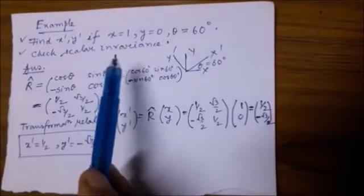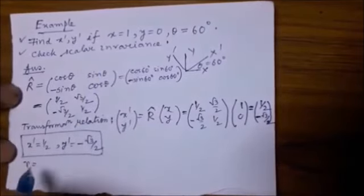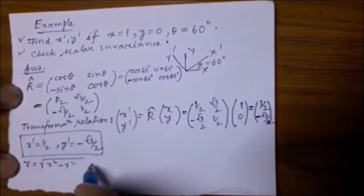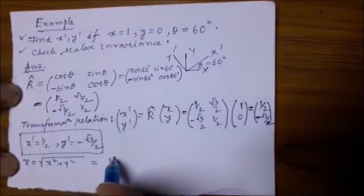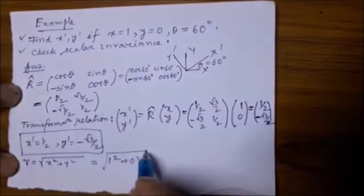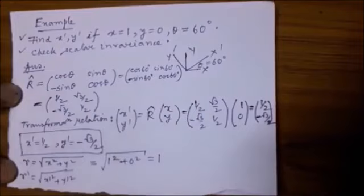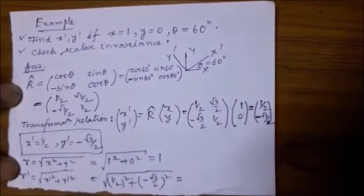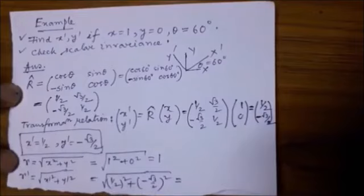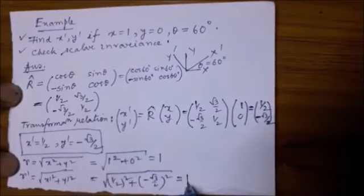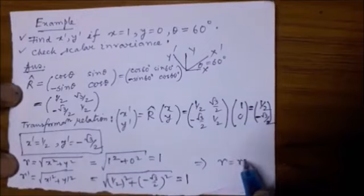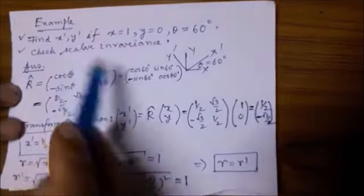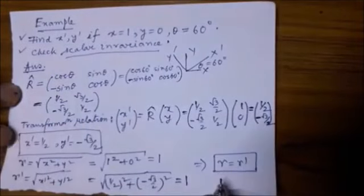We also have to check scalar invariance. The magnitude r equals √(x² + y²). In the unprimed frame with x=1, y=0, r = √(1² + 0²) = 1. And r-prime equals √(x-prime² + y-prime²) = √((1/2)² + (-√3/2)²) = √(1/4 + 3/4) = √1 = 1. We find r equals r-prime, which demonstrates scalar invariance.